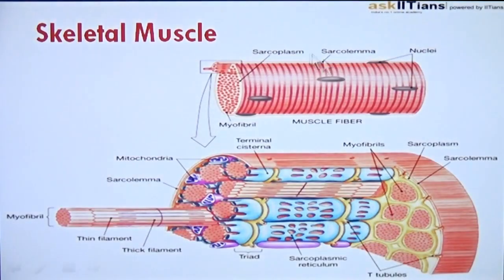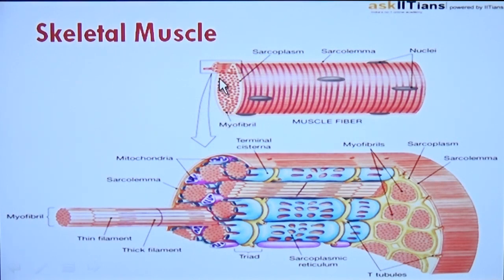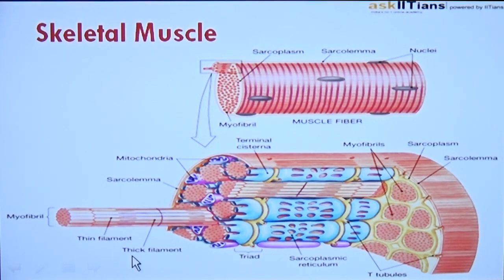Muscle contraction. We can see here a skeletal muscle fiber shown in this diagram. Sarcoplasma is here, sarcolema is here, and nuclei are present in the muscle fiber. Also, various myofibrils are present within a muscle fiber. Let's have a look at the zoomed view of this part. This myofibril is the main site of muscle contraction. Thin filaments and thick filaments are present in a myofibril, and these thin and thick filaments in turn lead to muscle contraction and relaxation.